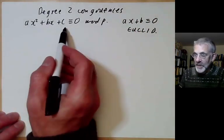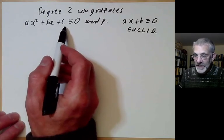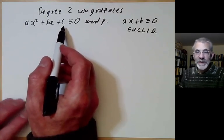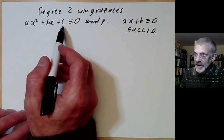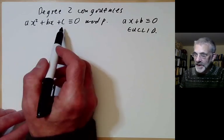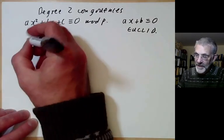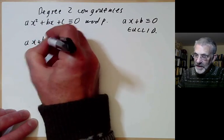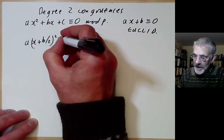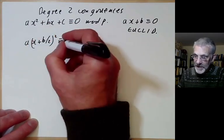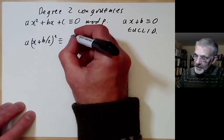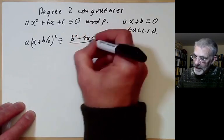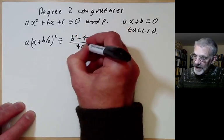So, how do we solve degree 2 congruences? We can start by copying the usual way of solving quadratic equations over the reals by completing the square. We write this as (ax + b/2)² ≡ (b² - 4ac) / 4a.